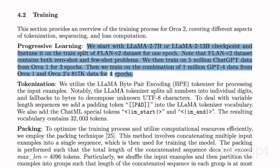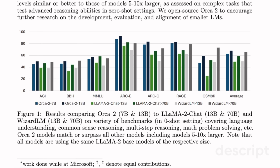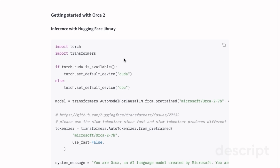Now let's look at some of the benchmarks. The dark black color represents the Orca 2 13 billion model and the dark green color is the LLaMA 2 70 billion chat model. On the GSM 8K dataset, the WizardLM 70 billion model outperforms the Orca 2 13 billion model, but on the rest of the benchmarks the performance is very close to WizardLM 70 billion, and it outperforms the original LLaMA 2 70 billion chat model on almost all benchmarks.